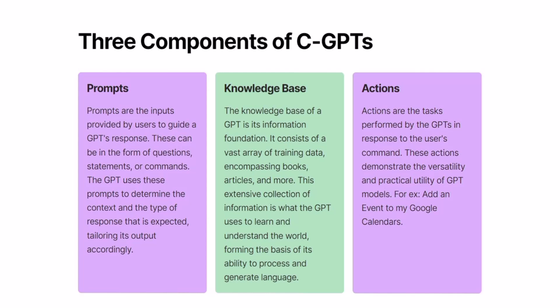When we combine prompts and a knowledge base, we build a bot that is basic to intermediate. But when we combine all three components, that's when we make an advanced bot. In this course, we will first make a basic bot to clear your fundamentals, and then we will build a bot with all three components so you know how to build advanced bots and automate your tasks. In terms of actions, we will be making a third-party API call through the bot itself to increase its dataset as well as its capabilities.